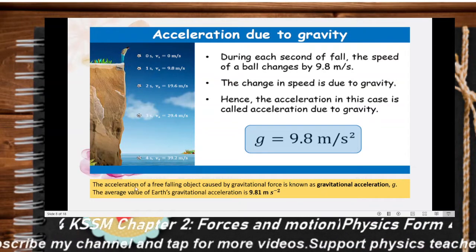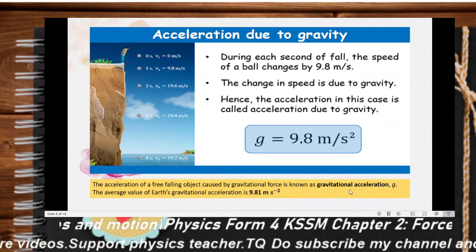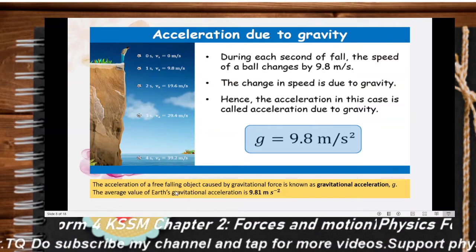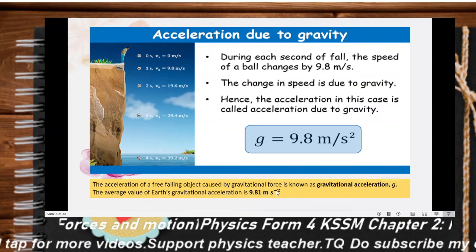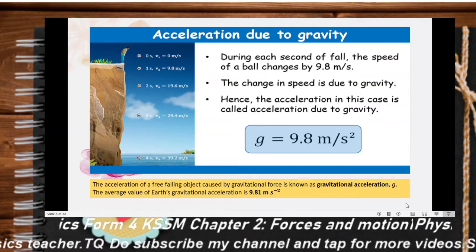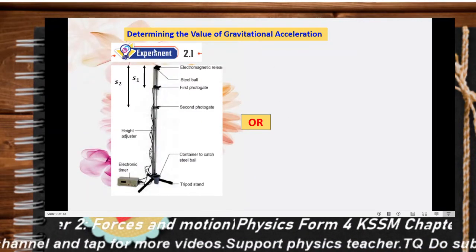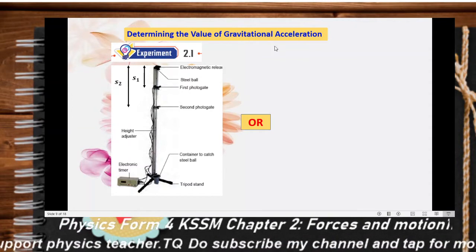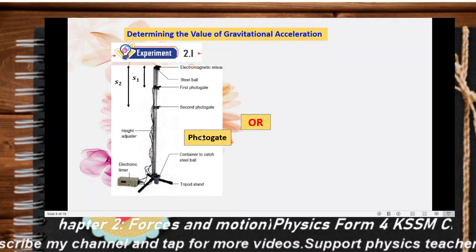The acceleration of a free-falling object caused by gravitational force is known as gravitational acceleration. The average value of Earth's gravitational acceleration is 9.8 m/s², and this value can be determined through experiment. Refer to Experiment 2.1 in your textbook — we want to determine the value of gravitational acceleration g, which can be determined using a photogate or ticker timer.